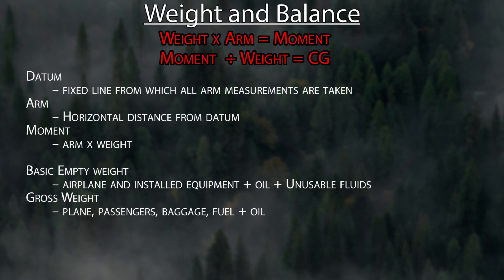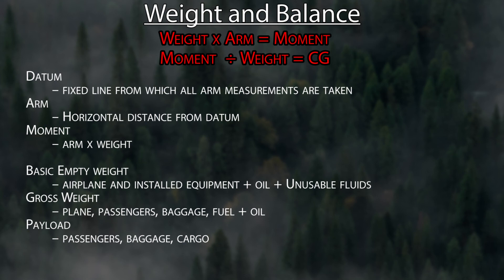These next two you might hear. Payload is what you could make money off of if you're an airline — that would be passengers, bags, and cargo. Finally, useful load is how much stuff you can carry. If you took the gross weight and subtracted the basic empty weight — maximum weight minus the empty airplane — that's how much useful load you have.